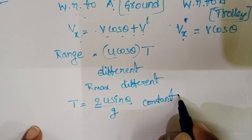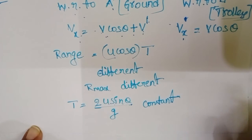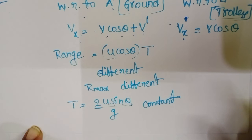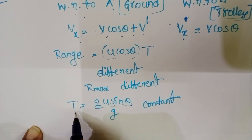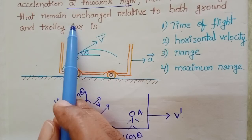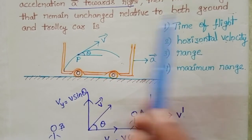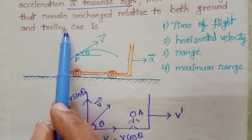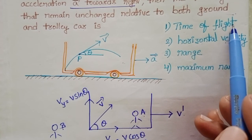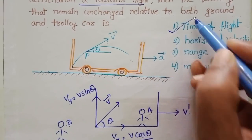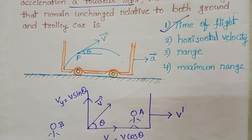So the horizontal component of velocity is different, range is different, and maximum range is different. But time of flight remains constant. Therefore, the quantity that remains unchanged relative to both ground and trolley is time of flight. The first option is correct.